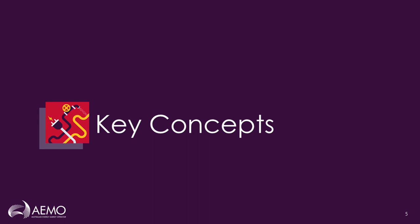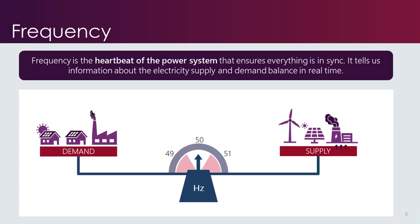Let's get started with some key concepts on frequency and power systems. Frequency is important because in a power system it's really important to maintain the balance between supply and demand, because electricity travels very close to the speed of light, meaning it has to be consumed at the same time that it is generated. Frequency helps us to measure this balance in real time — it's very much like the heartbeat of the power system. In the NEM, a perfectly balanced system would be at 50 hertz, meaning it repeats 50 times per second, with natural variations shifting this value slightly up or down.